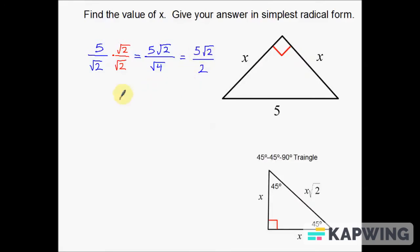Anyway, what this means is that my leg is equal to 5 root 2 over 2. You could also write it as 5 halves root 2. I've also seen it written that way. Either way, that is our answer. That is the leg of the right triangle. Okay, so there's just a couple of examples to help you with your 45-45-90 special right triangles.